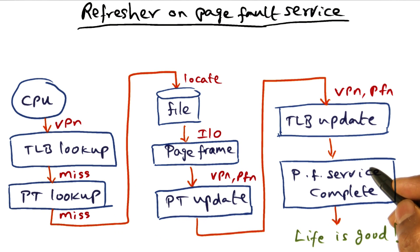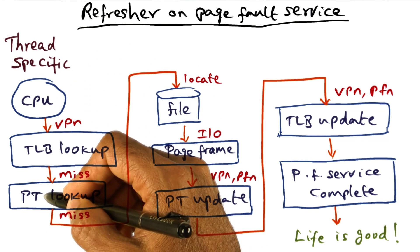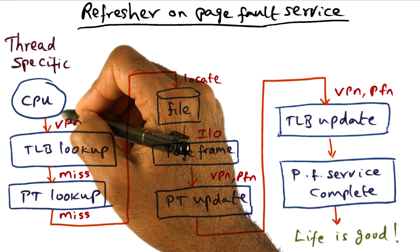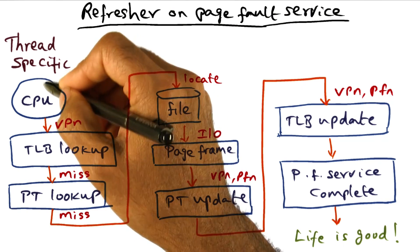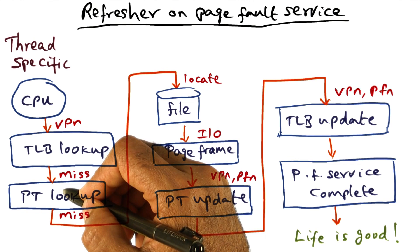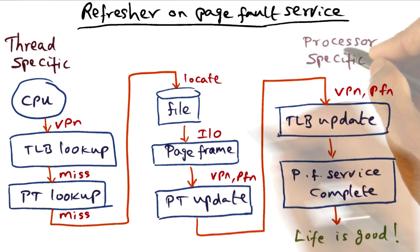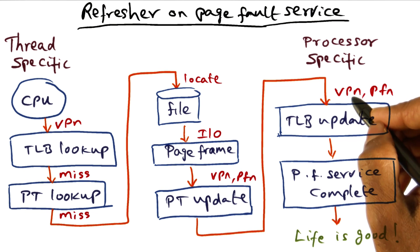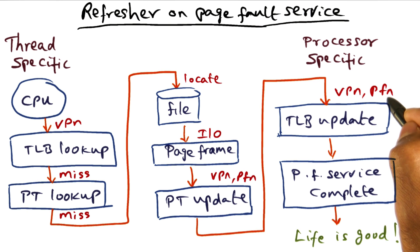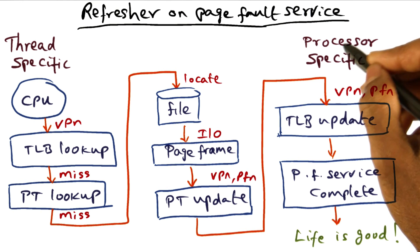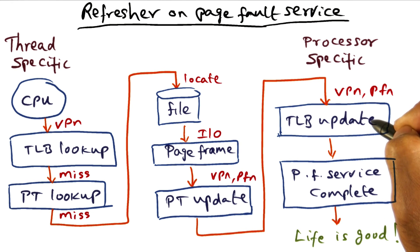Now let's analyze this picture and ask where the potential bottlenecks are. The TLB lookup and virtual-to-physical translation are entirely thread-specific and local to the processor on which the thread is executing — no serialization there. Similarly, updating the TLB after the page fault is serviced is local to a particular processor, so that is also a processor-specific action with no serialization.